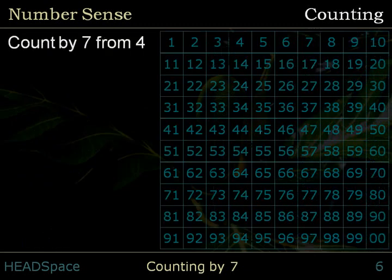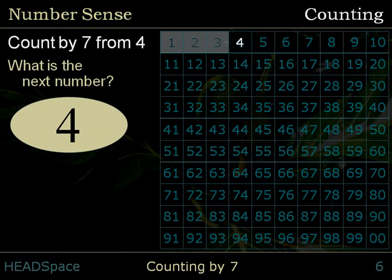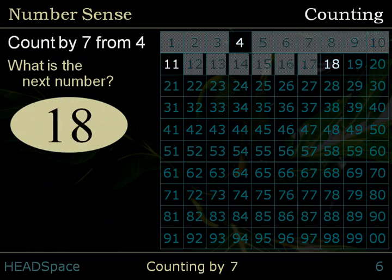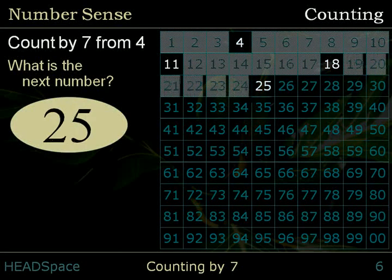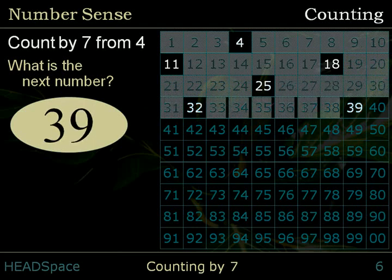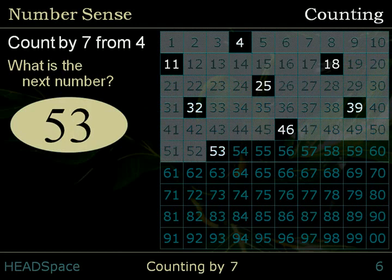Count by 7 from 4. What is the next number? 4, 11, 18, 25, 32, 39, 46, 53, 60.